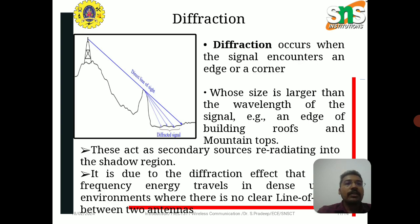Diffraction occurs when the signal encounters an edge or a corner whose size is larger than the wavelength of the signal — for example, the edge of building rooftops and mountain tops. These act as secondary sources re-radiating into the shadow region. It is due to the diffraction effect that frequency energy travels in dense environments where there is no clear line-of-sight between two antennas.